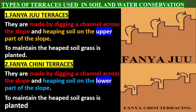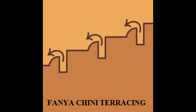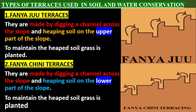Fanyachini terraces are made by digging a channel across the slope and heaping soil on the lower part of the slope. To maintain the heaped soil, grass is planted on top of the heap.